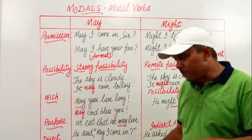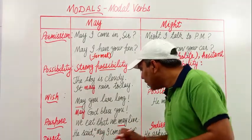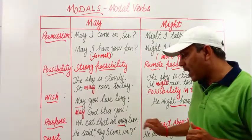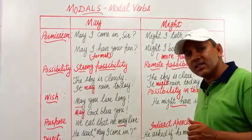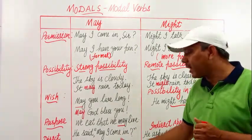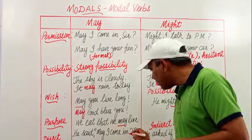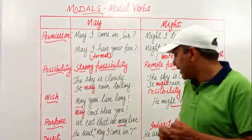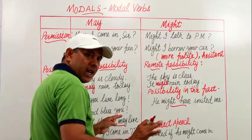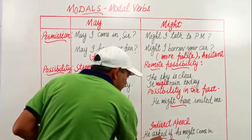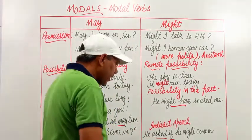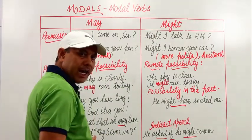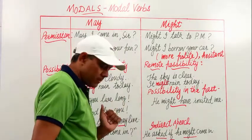The last use is indirect speech. If 'may' is used in direct speech, then to change it to indirect speech, we use the past form of 'may,' which is 'might.' We can identify direct and indirect speech by looking for inverted commas — direct speech has inverted commas, while indirect speech uses a conjunction like 'if' or 'that' without inverted commas. For example, in indirect speech: 'He asked if he might come in' — here 'may' is changed to 'might.'